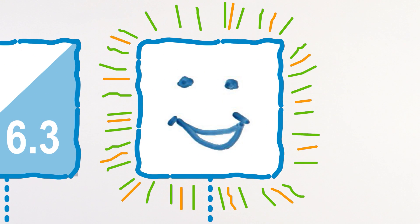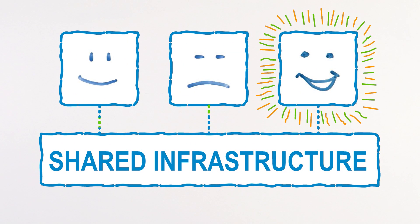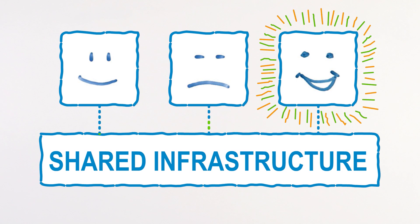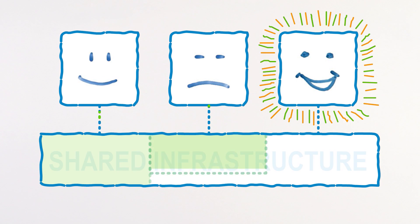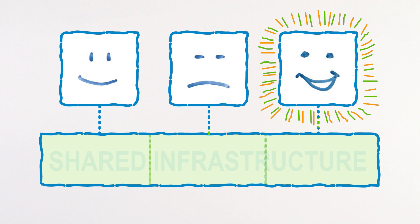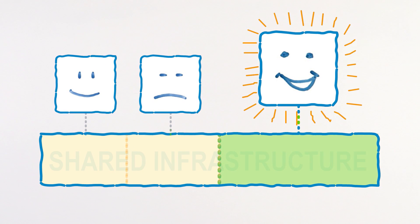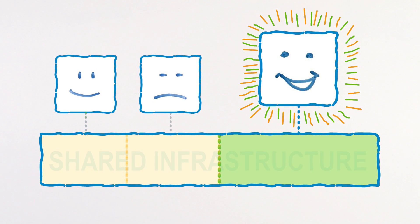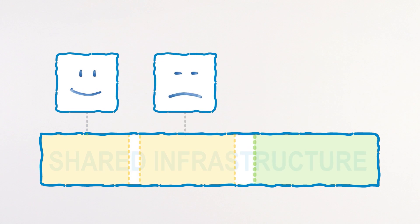What we can do right now with SAA is we can detect that there are noisy neighbors on a server, and therefore there's a high level of contention for shared resources. What we get to do in the next generation is we can see which virtual machine is actually being the noisy neighbor. And then a generation after that, we'll be able to constrain its impact on its neighbors so that it's no longer noisy.